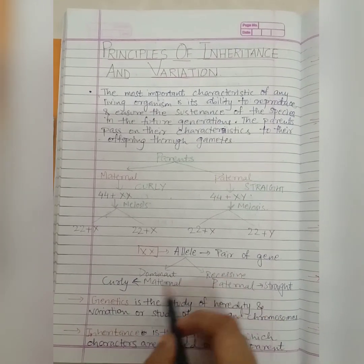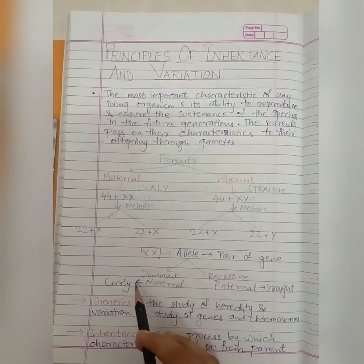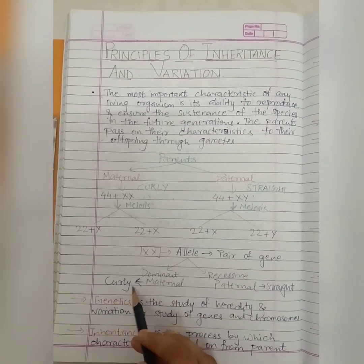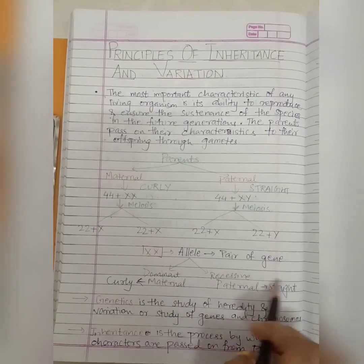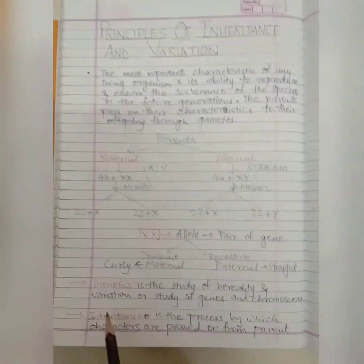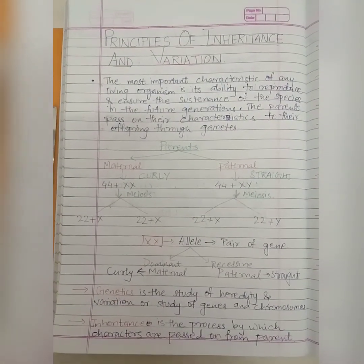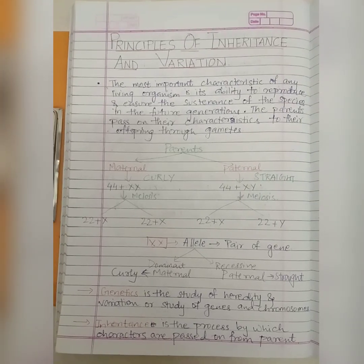XX is an allele, which is a pair of genes. An allele is of two types: dominant and recessive. Here, curly hair is dominant and straight hair is recessive.